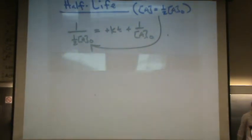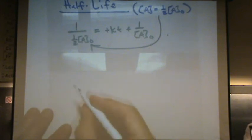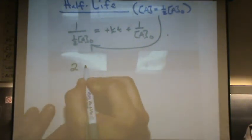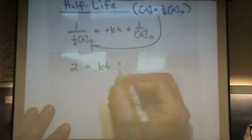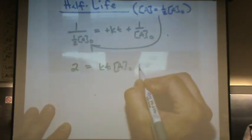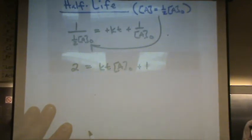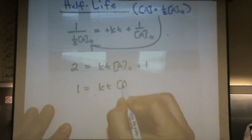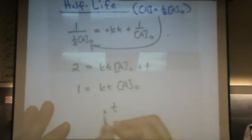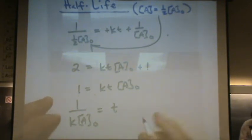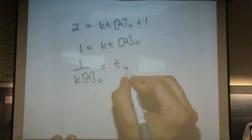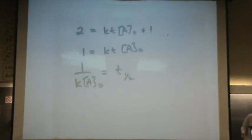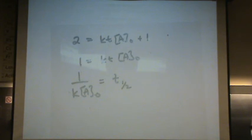Now, I just do a little bit of solving. I'm going to multiply by A-naught, and you have 2 equals kt A-naught plus 1. I could subtract 1 from both sides. 1 equals kt A-naught. Solve for t. t equals 1 over k A-naught. And this is not just any t, this is the half-life. So, I'm going to put a little subscript half-life there to show that it's not any time, it's the half-life time.